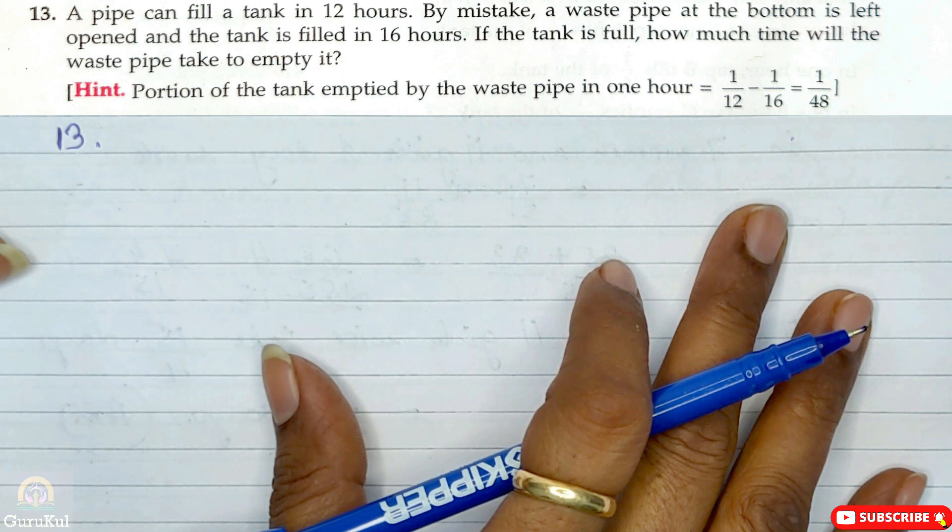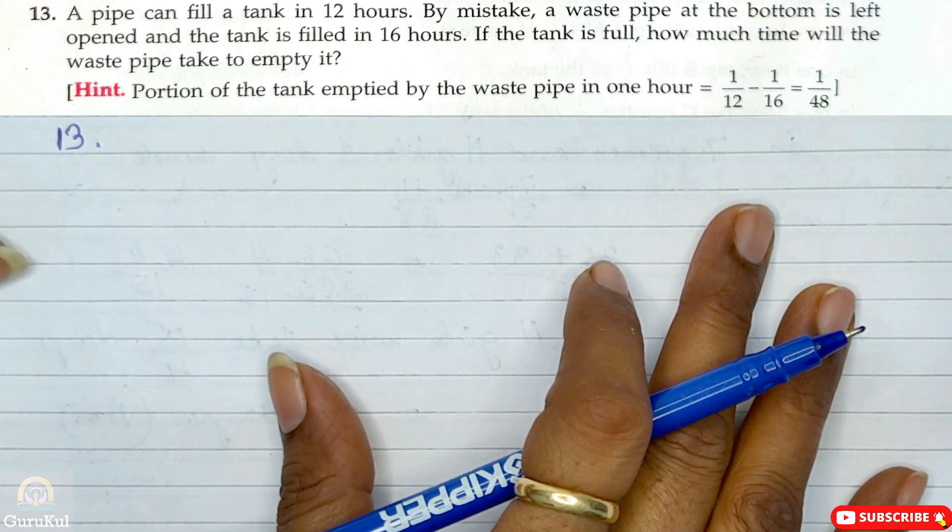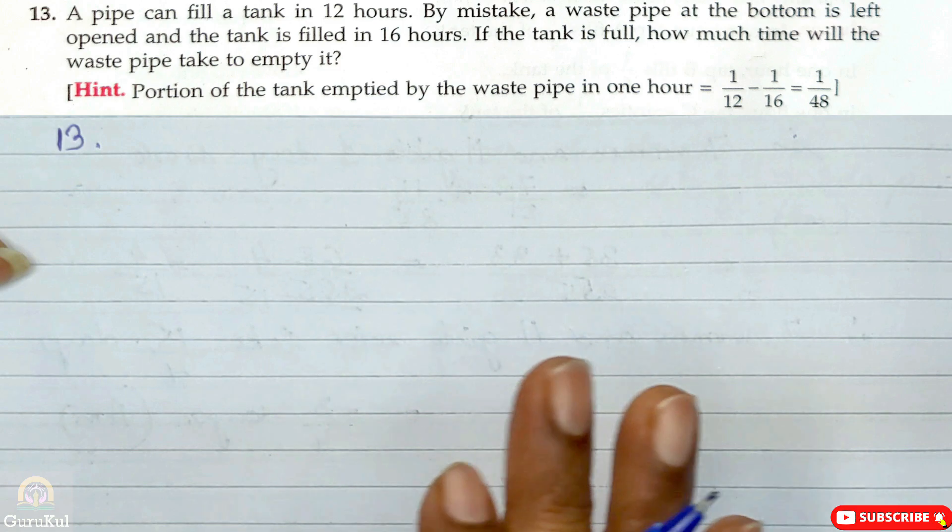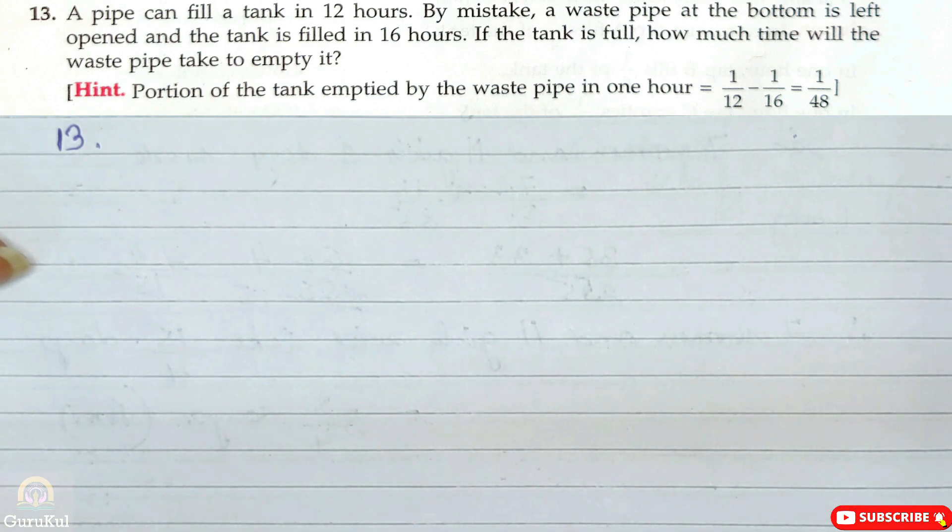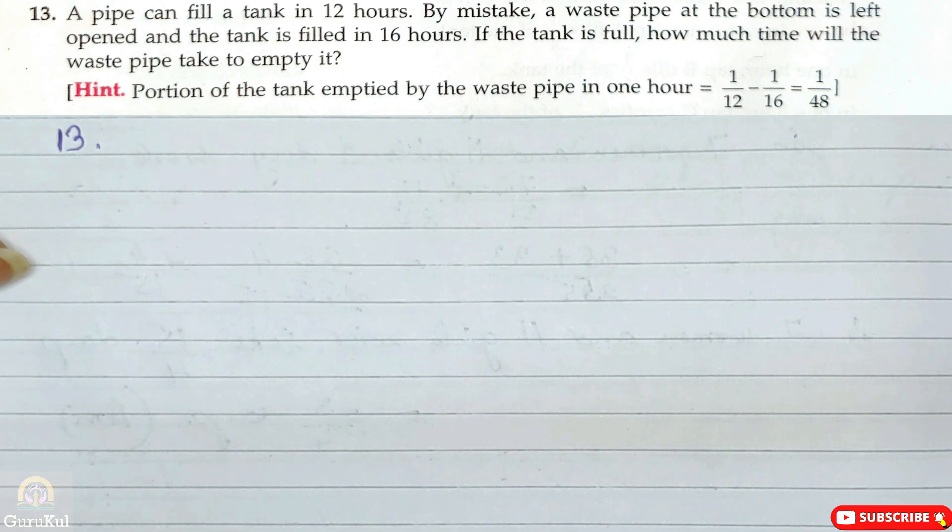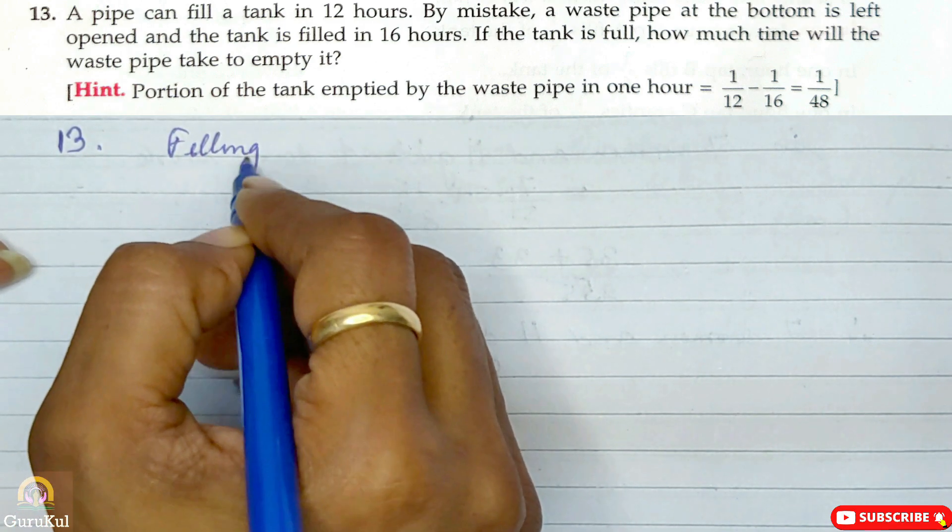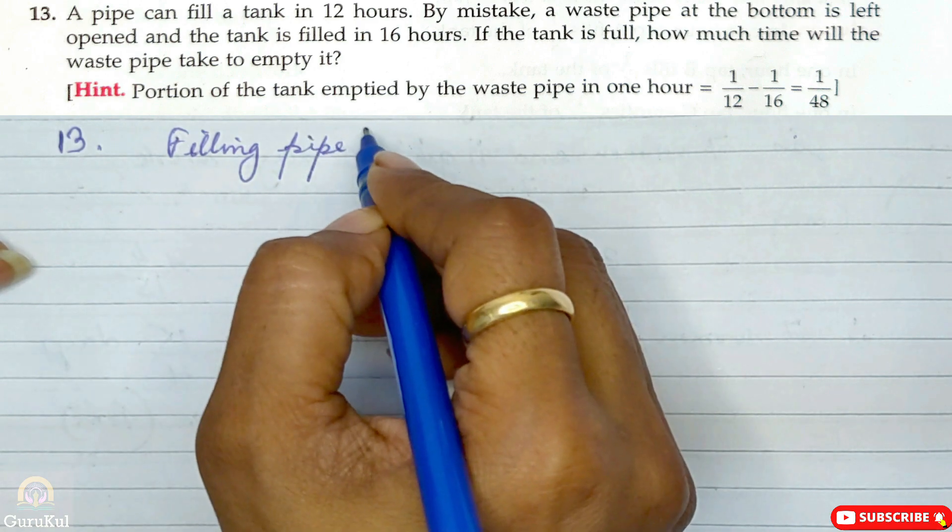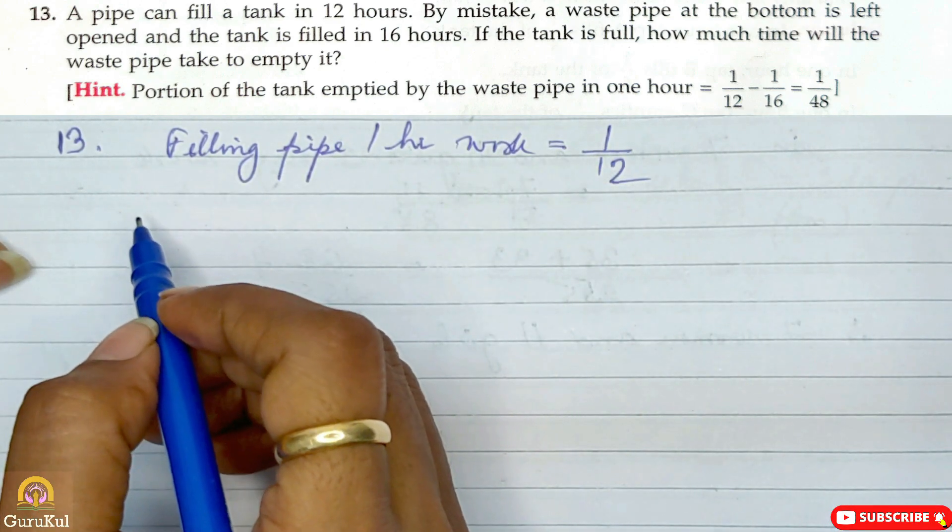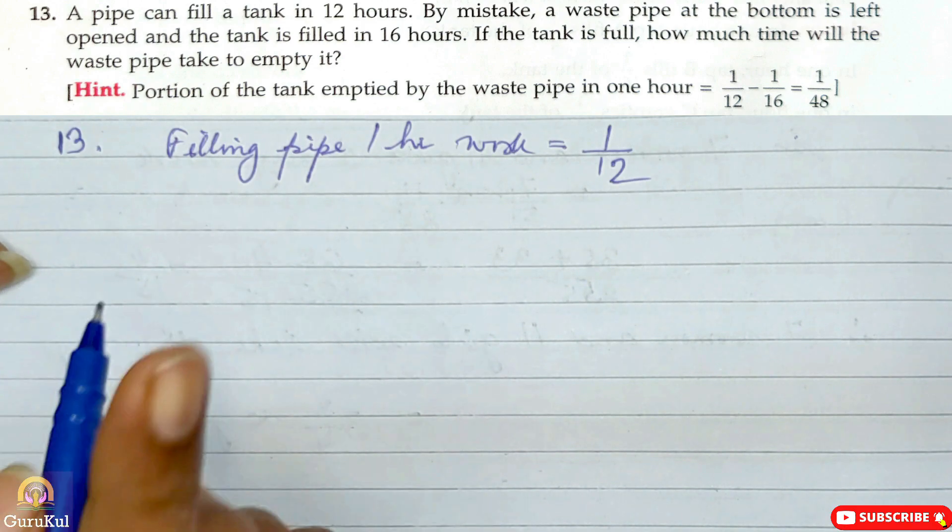Question number 13. A pipe can fill a tank in 12 hours but by mistake a waste pipe at the bottom is left open and the tank is filled in 16 hours. Time increased because it's filling from top while the waste pipe is reducing water from bottom. So if the tank is full how much time will the waste pipe take to empty it? First we'll find their one hour work.